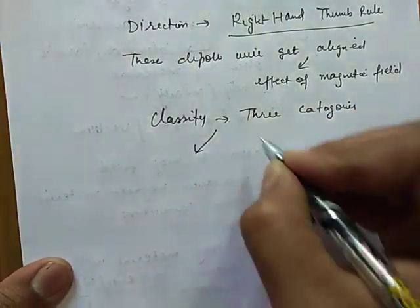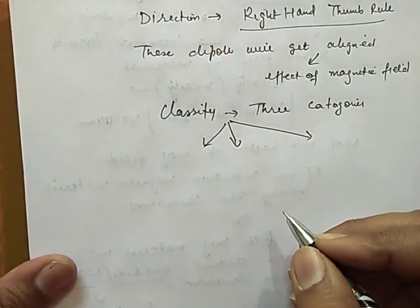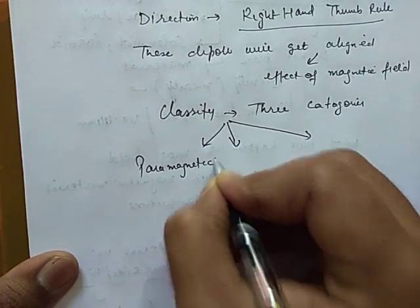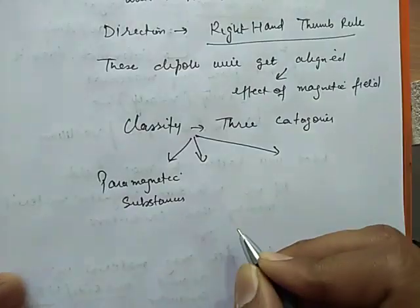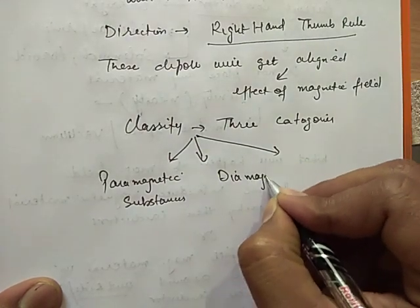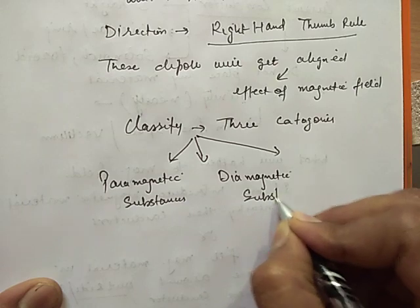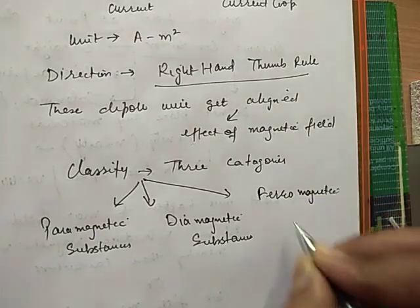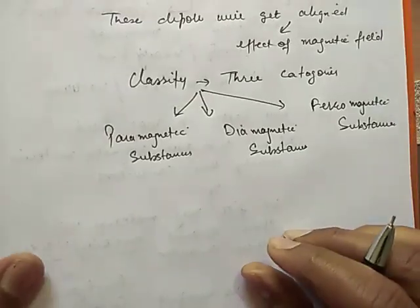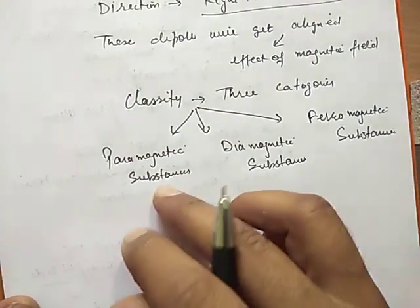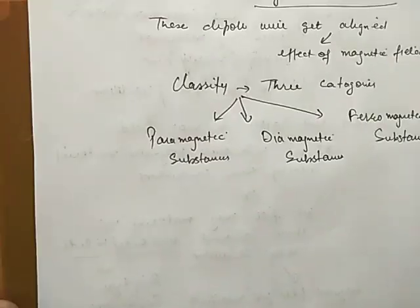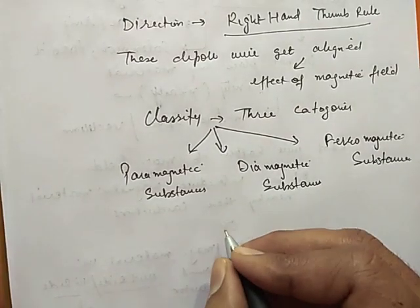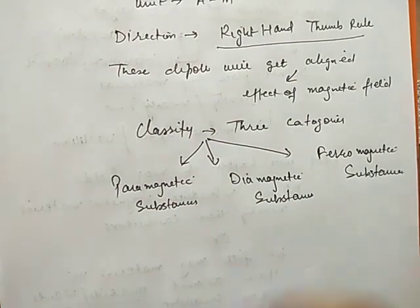First is paramagnetic substances. Second is diamagnetic substances. And third is ferromagnetic substances. Now we will study these three materials one by one. In the next video I will discuss these three types of materials one by one.